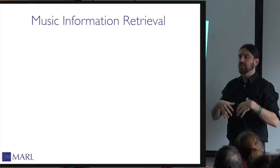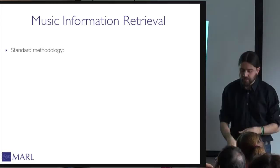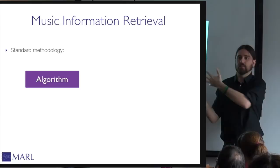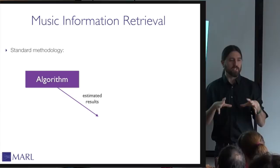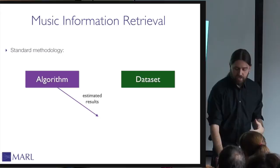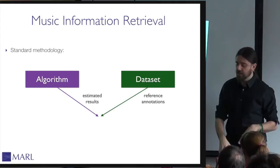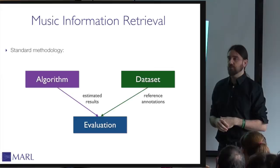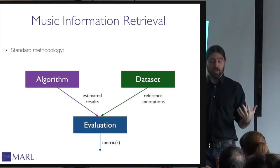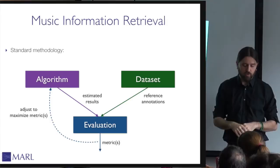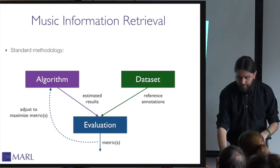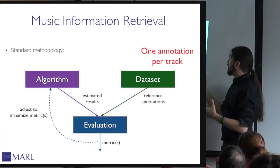How do we as MIR researchers develop algorithms? The standard methodology is: first, we design an algorithm to extract chords, beats, or structure, producing estimated results. Then we compare those with reference annotations from datasets — usually human-annotated tracks — in an evaluation process that produces metrics used to compare algorithms and assess performance. We can also use these metrics to adjust the algorithm to maximize performance. This is the standard methodology. However, in most datasets there is only one annotation per track.